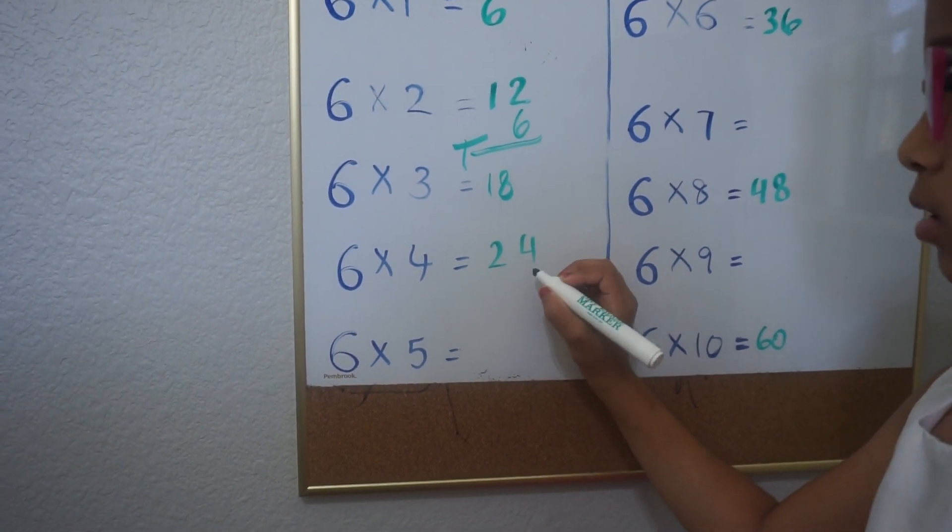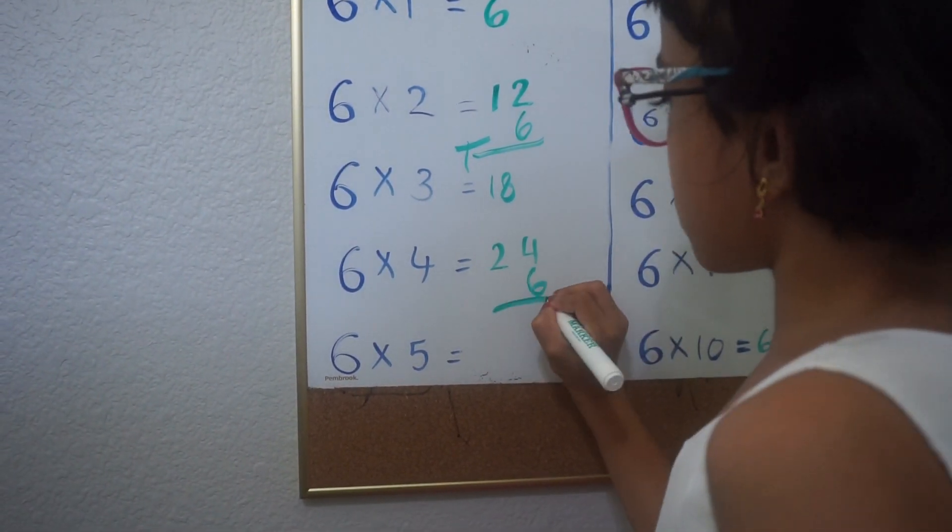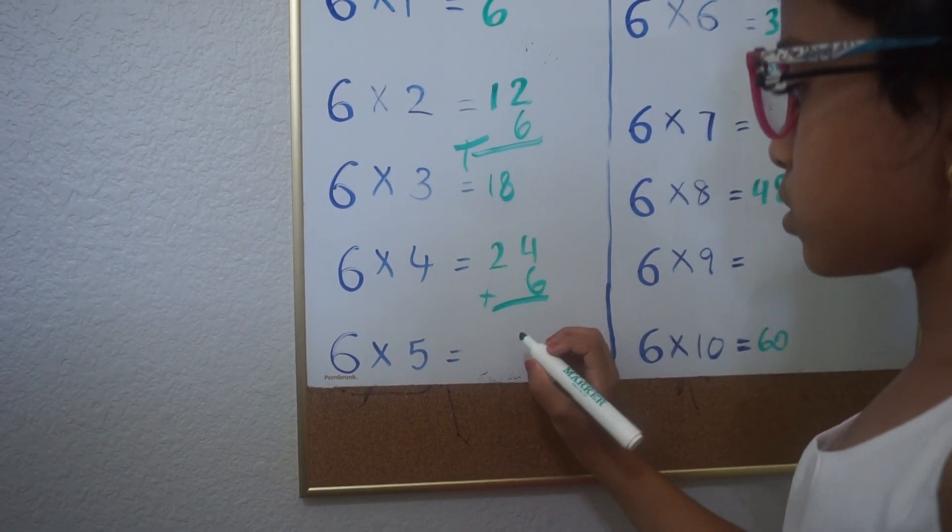For this one, you have to add 6 again. So 24 plus 6 equals 30.